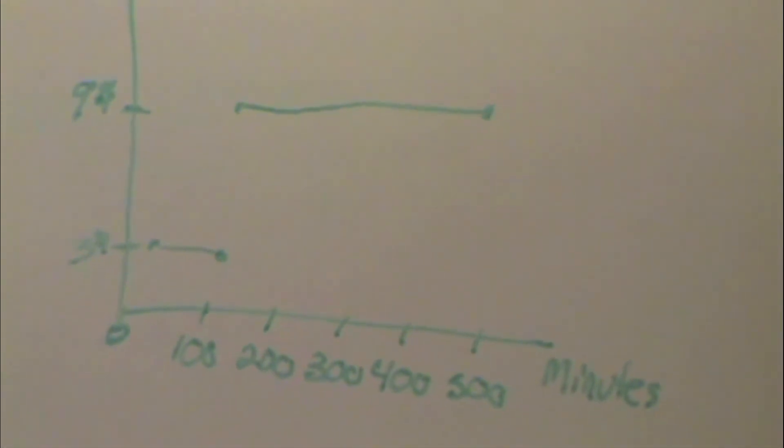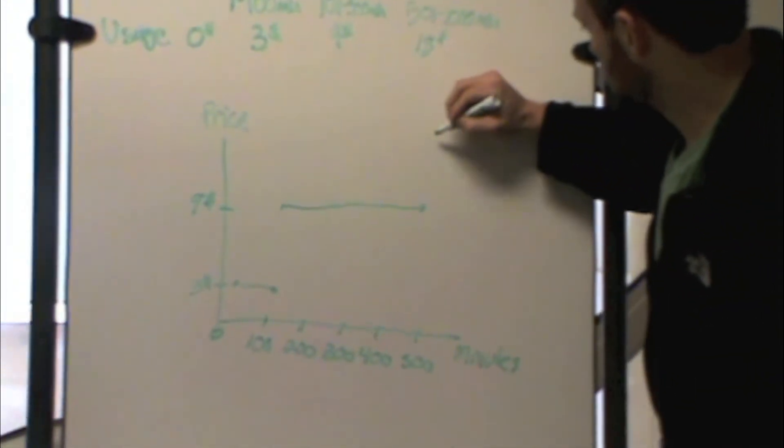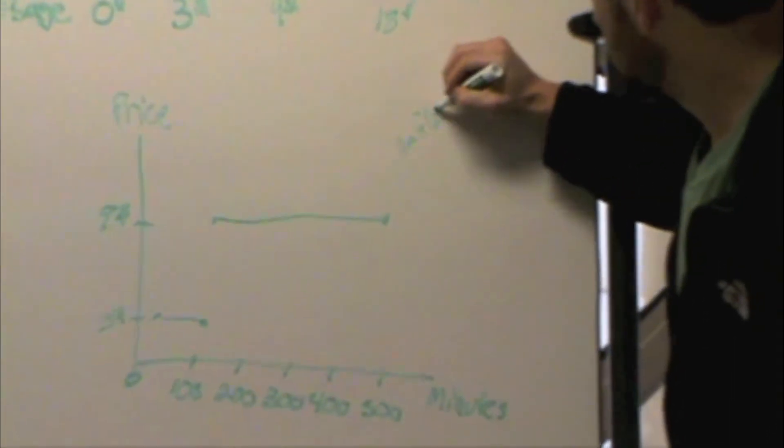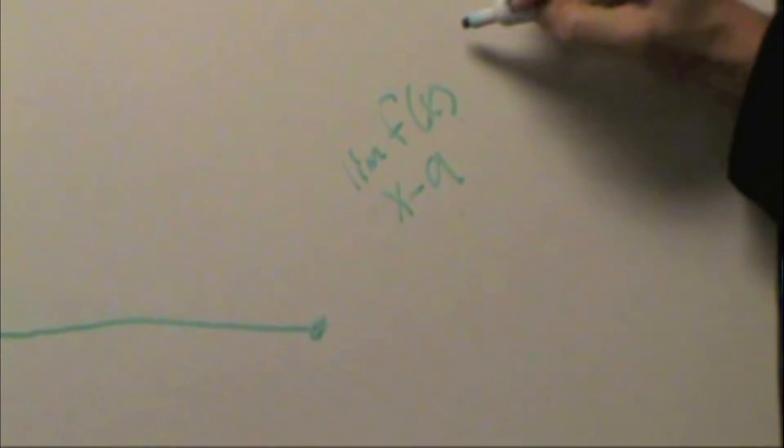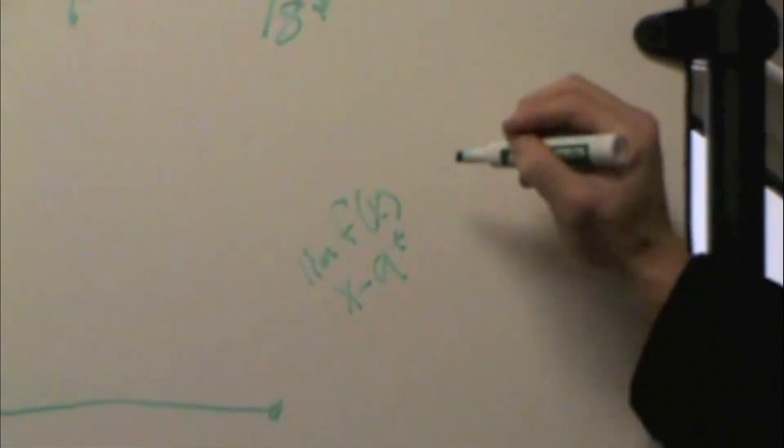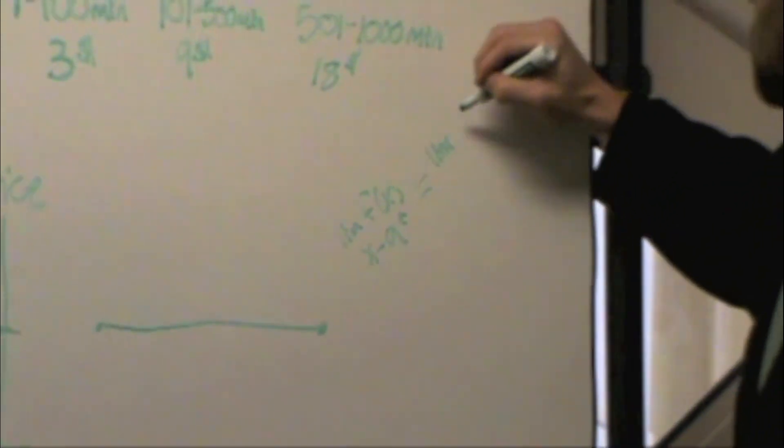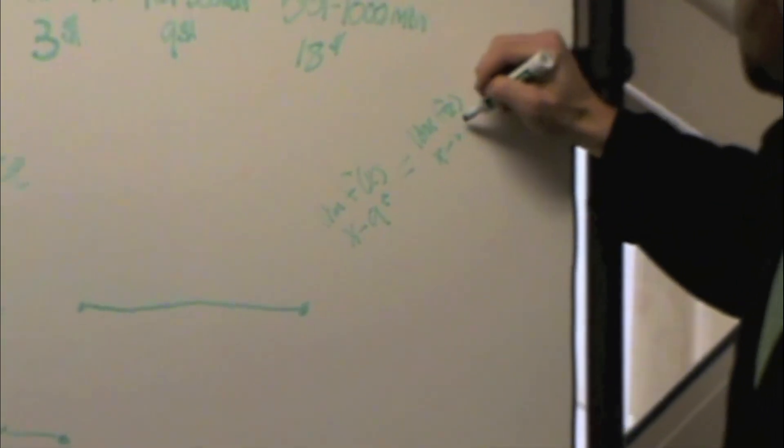Basically what this is showing is that when you take the limit of f of x as x approaches a from the right hand side, it's not going to equal the limit of f of x as x approaches a from the left hand side. So this shows discontinuity.